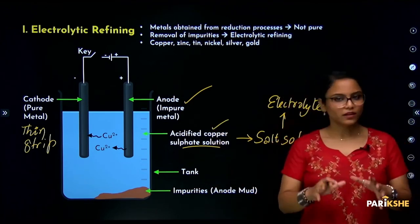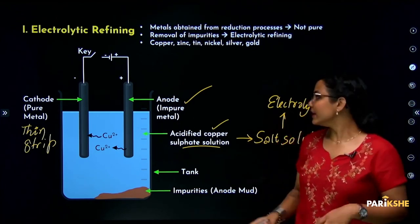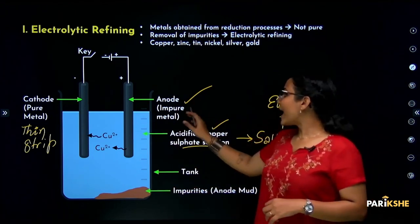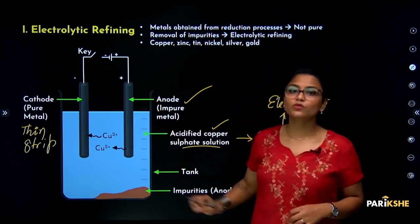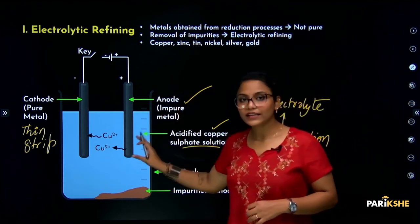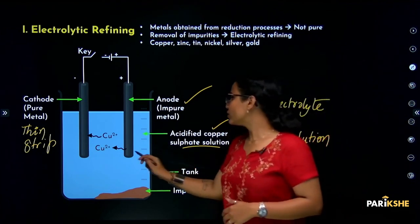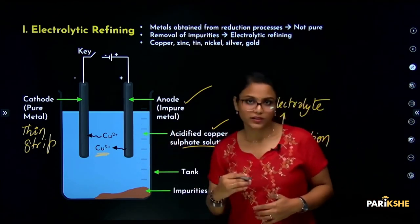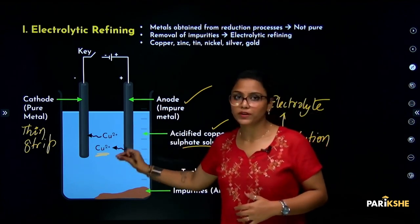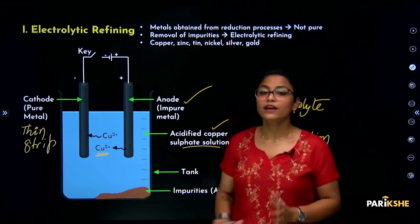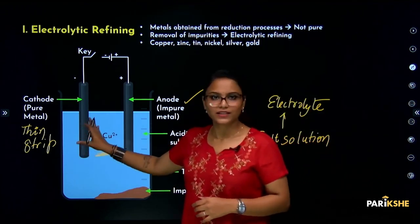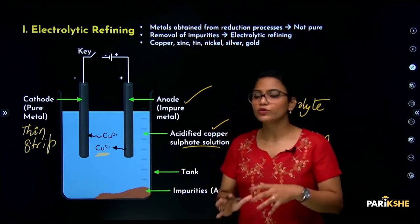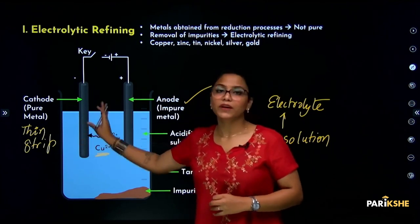At the anode, the impure metal electrode — for example, copper — when current passes, copper atoms dissolve and enter the electrolyte as copper ions. The electrolyte is the salt solution. At the cathode, copper ions from the electrolyte are deposited, and the same amount of copper is deposited at the cathode, start to start.